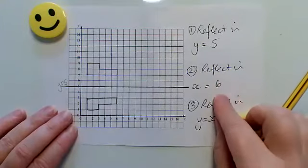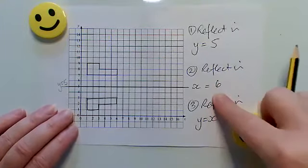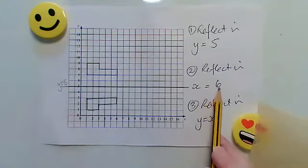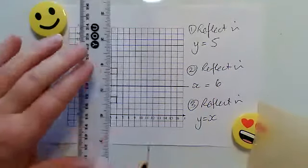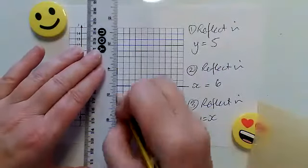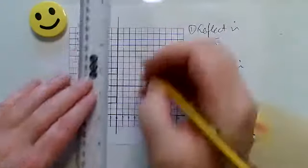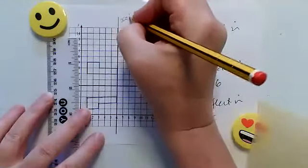I now need to reflect it in the line x equals 6. So every x-coordinate will be 6 on this line, so it's going to go through the line x equals 6 on the x-axis. So this is x equals 6.